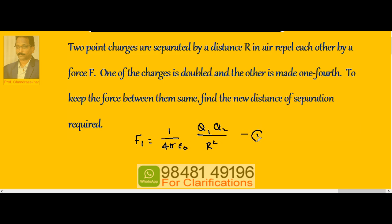Call this equation 1. In the second case, let us say force is F2, so 1 by 4πε₀ times one charge is doubled, say 2q1, and the other is made one-fourth, 1 by 4 q2.